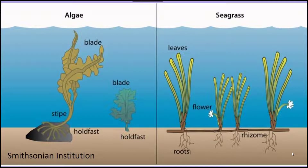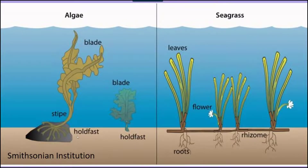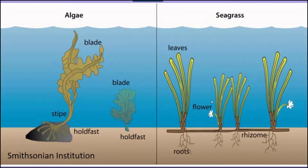Looking at structures of algae versus seagrass: algae have a holdfast, while plants have a rhizome and roots that serve a similar anchoring function. In algae there is a structure equivalent to a small stem, and a blade equivalent to the leaves of seagrass. Seagrasses also have flowers, which are not present in algae.